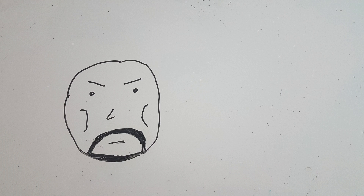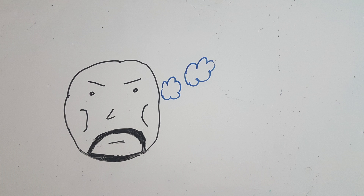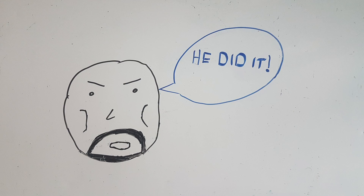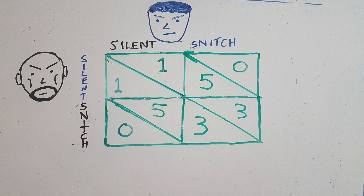Boris has to think to himself whether or not he should snitch. He and Dante are pretty good friends, but at the end of the day he can't be sure that Dante himself will not snitch, and he wants to be safe regardless — so he chooses to blame Dante. In doing so, Boris has ensured that whether or not Dante snitches, he is in the best position possible. If Dante doesn't snitch, Boris goes free, as we can see at the bottom left corner of the payoff square. And if Dante does snitch, Boris gets less time in prison than if he himself did not snitch, as we can see at the bottom right of the payoff square.